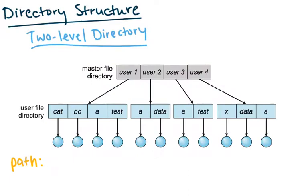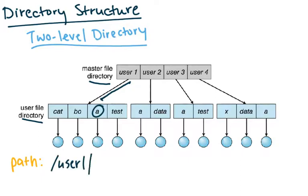You can then move forward to a two-level directory. Now there is a master directory and then user directories. Each user can define its own folders within its user file directory. Now we can think of paths — locations of files can be associated with paths. For instance, the path to a file would be user1 slash a. And so the whole concept of paths comes up.